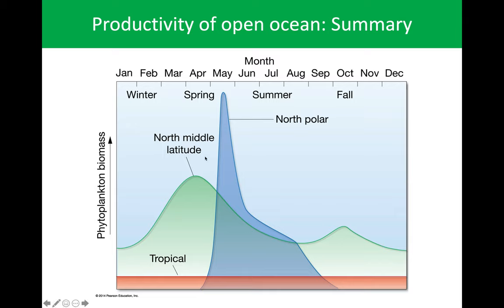This is a summary of how they look: if we're just looking at phytoplankton biomass, tropical is low and stays consistent throughout the entirety of the year. Mid latitudes experience a large pulse in the spring and in many cases a smaller pulse at the very beginning of fall. The polar regions have a huge bloom in late spring, and then that drops off substantially and continues to drop off for the rest of the year.